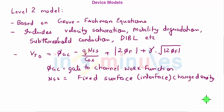Now let's plug into level 2. To continue with level 2 model, this model is based on Grove-Frohman equations. This includes a lot of second order effects like velocity saturation, mobility degradation, subthreshold conduction, DIBL etc. Here I have just mentioned the value of the threshold voltage Vt0 equal to phi gc minus q nss upon cox plus mod of twice phi f plus gamma square root of twice phi f, where phi gc is the gate to channel work function and q is the charge fixed surface interface charge density. Like this we can write the equations of id also but it's quite a complicated equation. So I've mentioned in the notes for your reference.